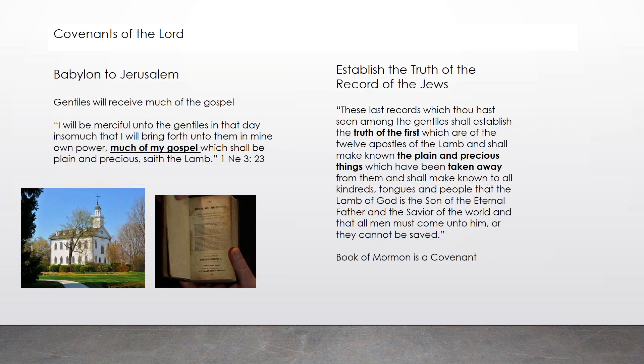'These last records which thou hast seen among the Gentiles shall establish the truth of the first, which are of the twelve apostles of the Lamb, and shall make known the plain and precious things which have been taken away from them, and shall make known to all kindreds, tongues, and people that the Lamb of God is the Son of the Eternal Father, the Savior of the world, and that all men must come unto him or they cannot be saved.' Much of God's gospel is going to get restored through the Gentiles, overcoming — restoring — the plain and precious things, primarily the covenants of the Lord.